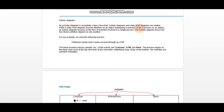Activity diagram and state chart diagram are related. We have already discussed the state chart diagram. They are related but also different at some point. The state chart diagram focuses attention on the object which is in a process — the object is focused in the state chart diagram. But the activity diagram focuses on the activities involved in the flow.